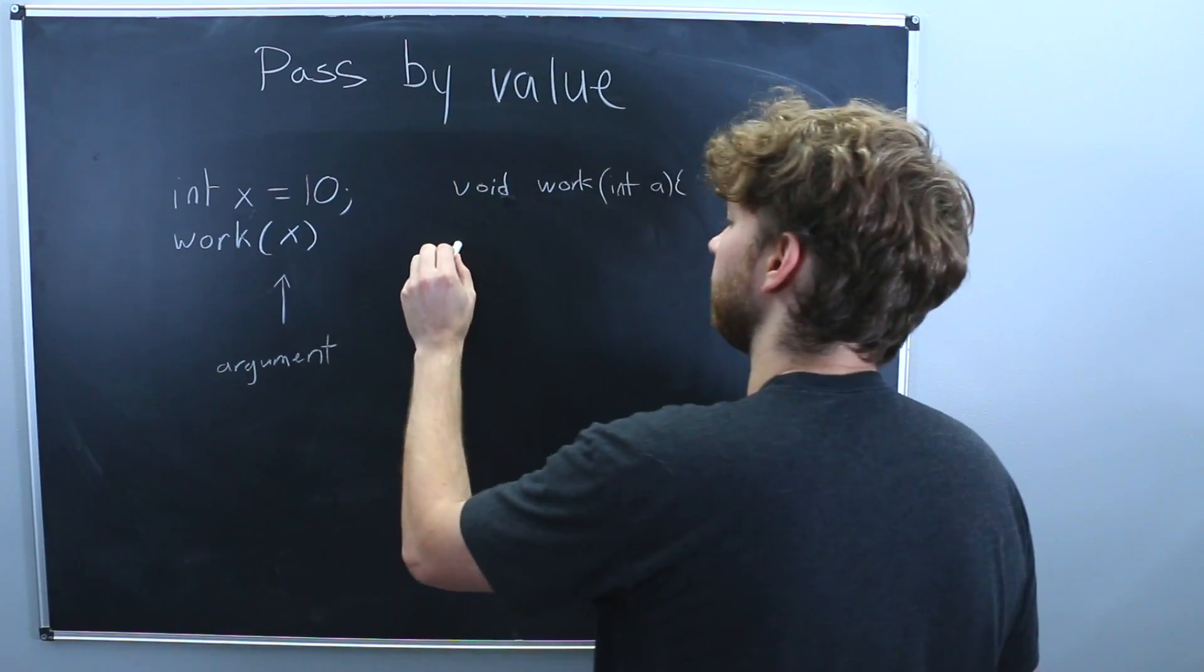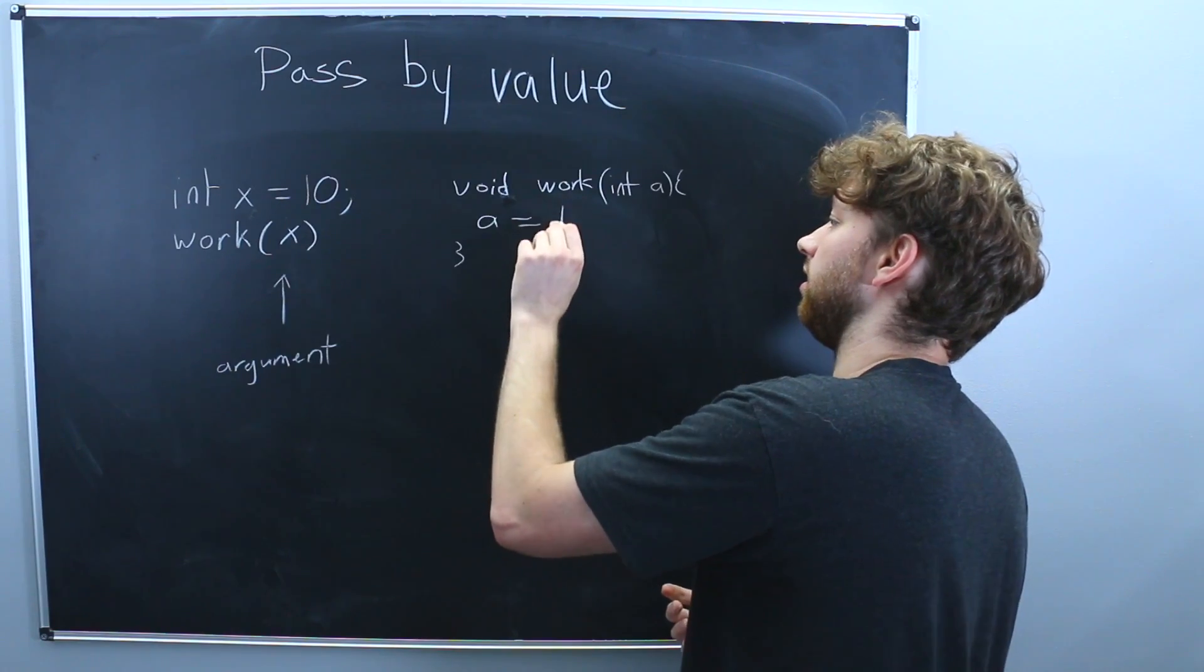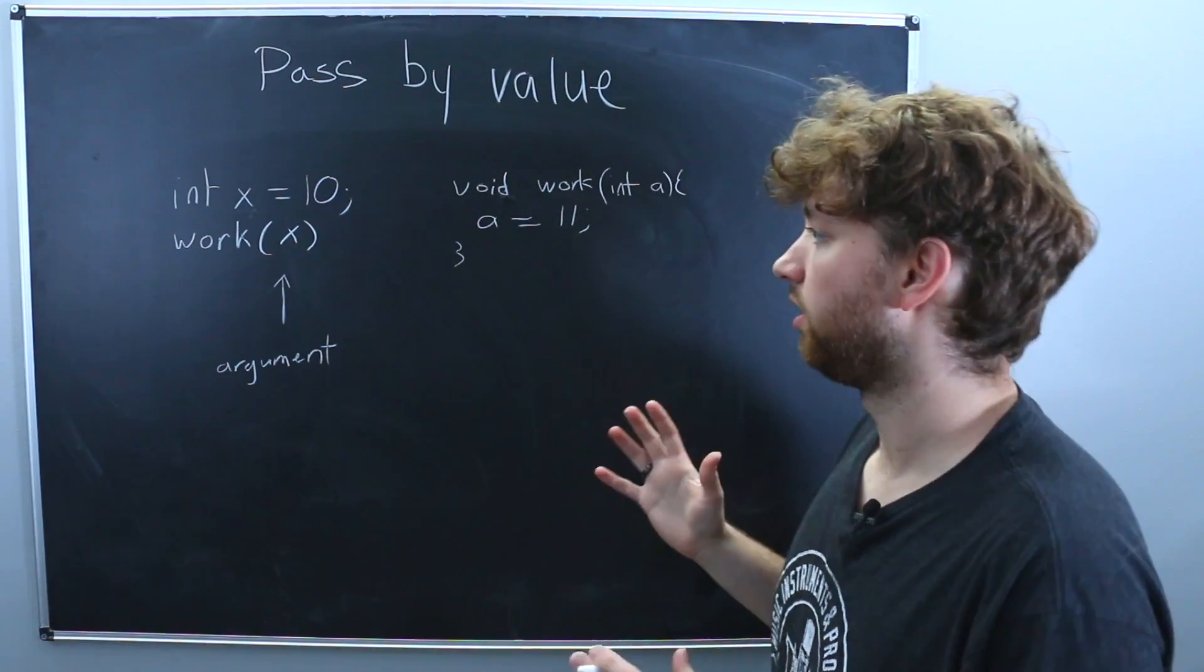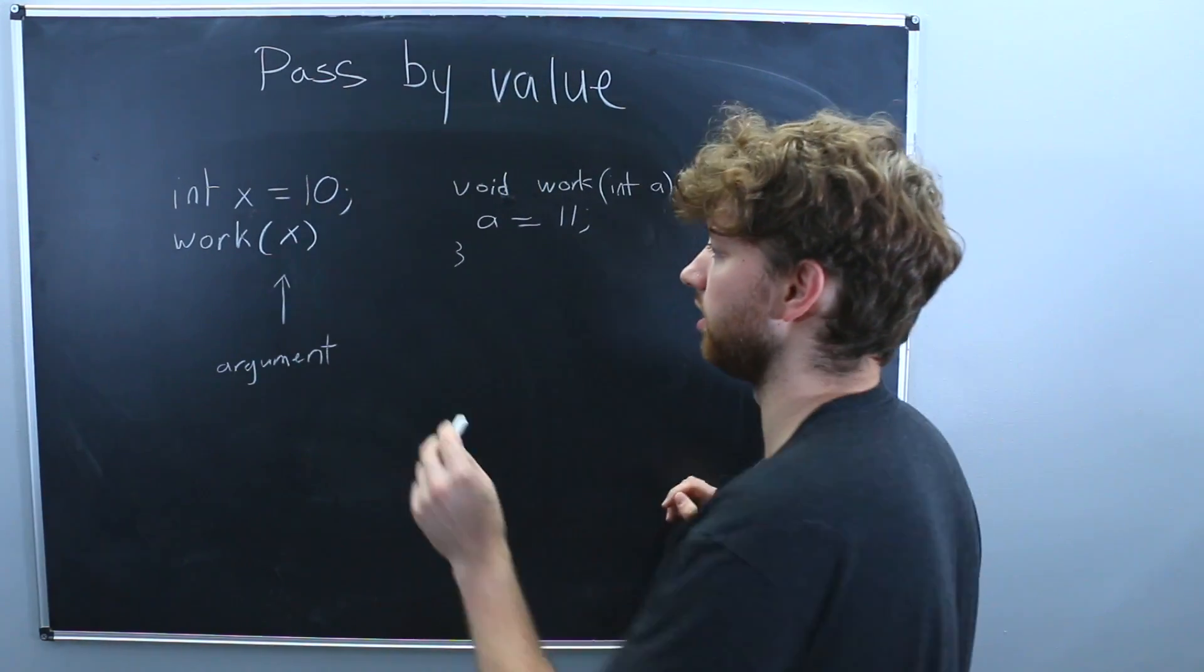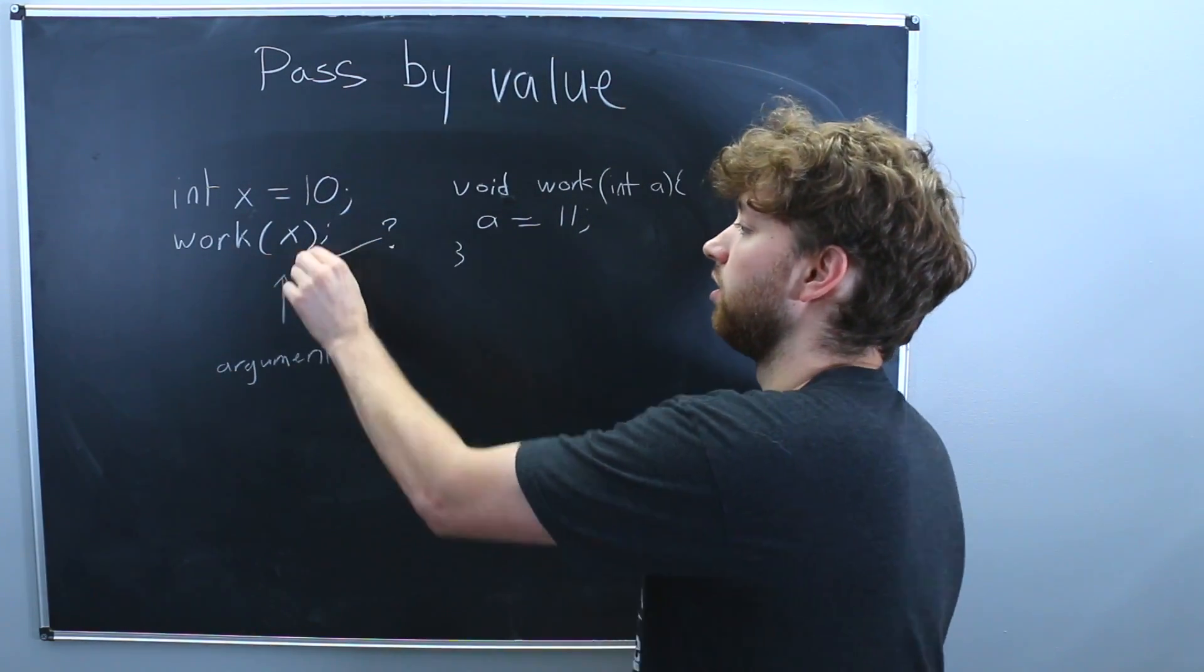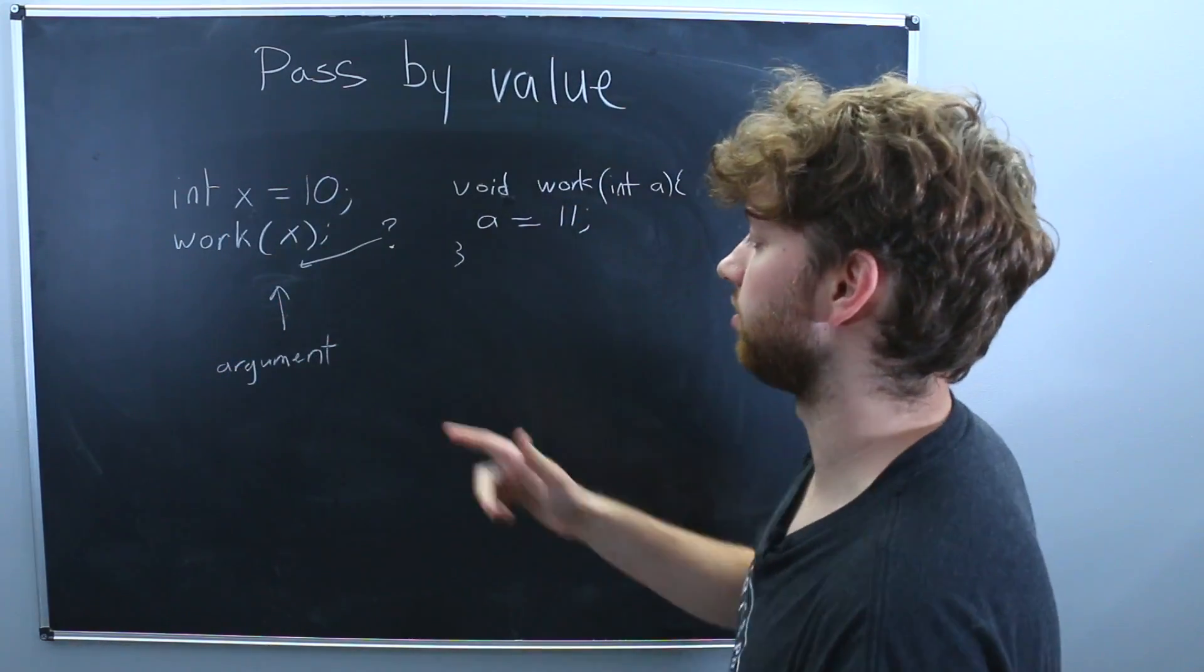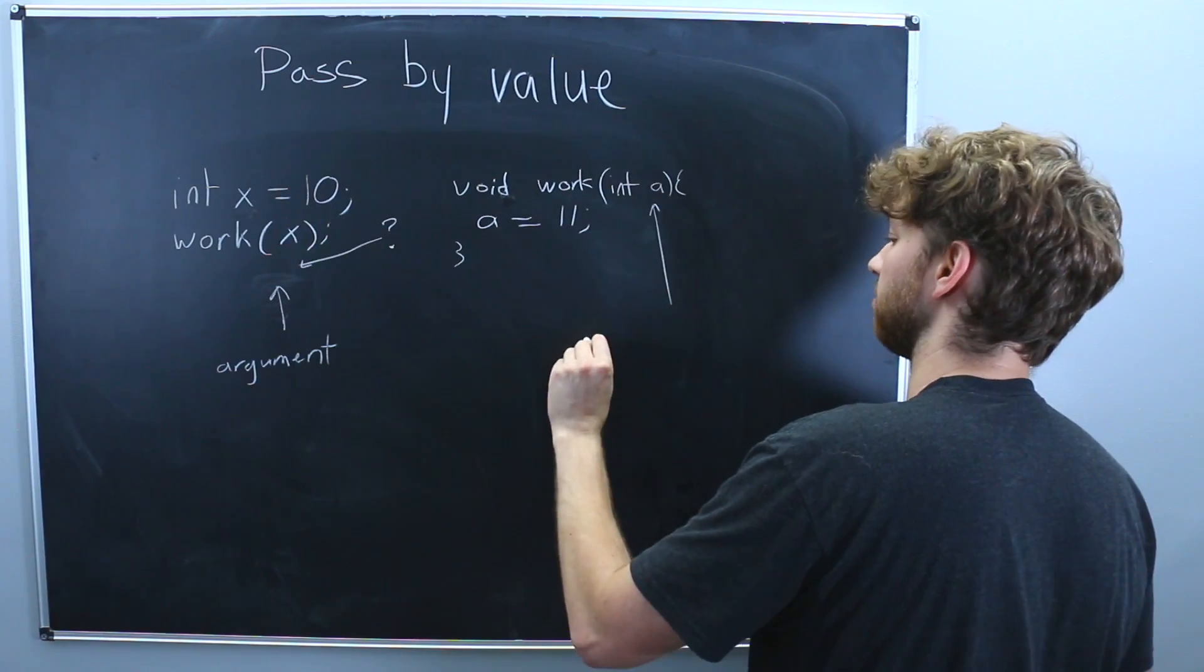All right, so in here, we could do something with a, such as saying a is 11. What exactly is going to happen here? And specifically, the part I am most interested in is right here. After we invoke this function, what is the value of x? So we're going to figure that out. And just to continue our little definitions here, this is said to be a parameter.